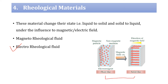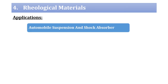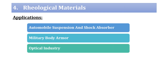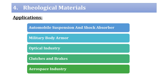A typical illustration of magnetorheological fluid shows two conditions: when there is no magnetic field, the fluid behaves normally; when the magnetic field is turned on, the magnetic particles arrange in a line and act as a solid medium. This is used in shock absorber and body armor conditions. Rheological materials are widely used in automobile suspension and shock absorbers, military body armor, optical industries, clutches and brakes, aerospace industries, and medical instruments.